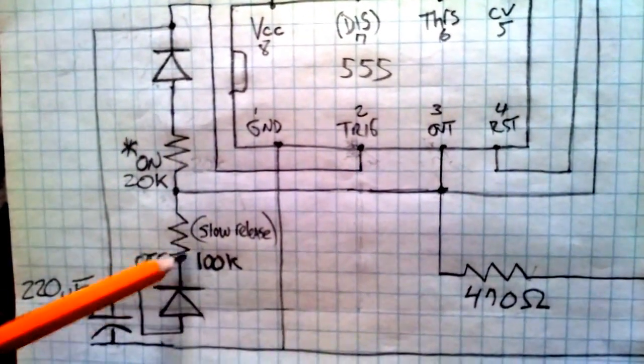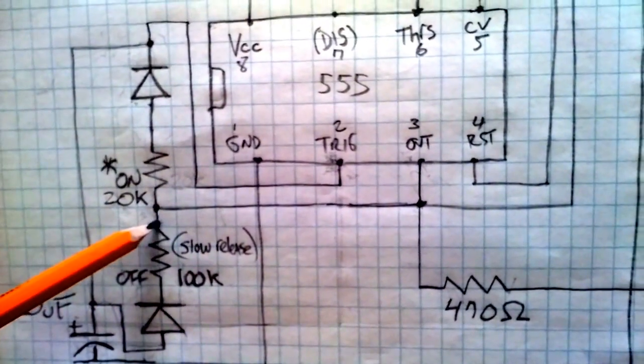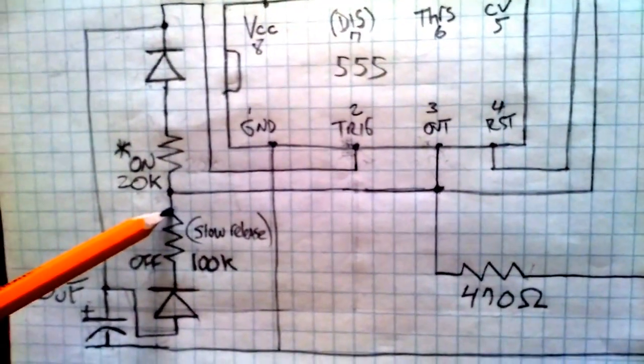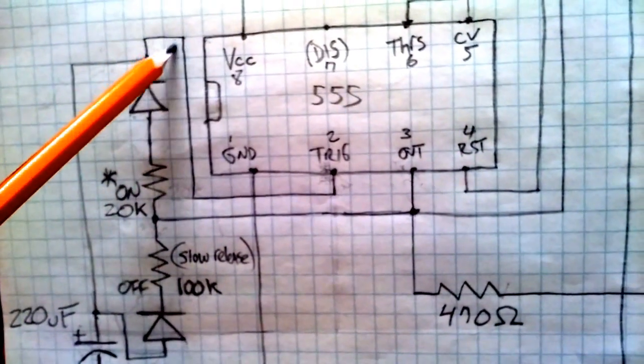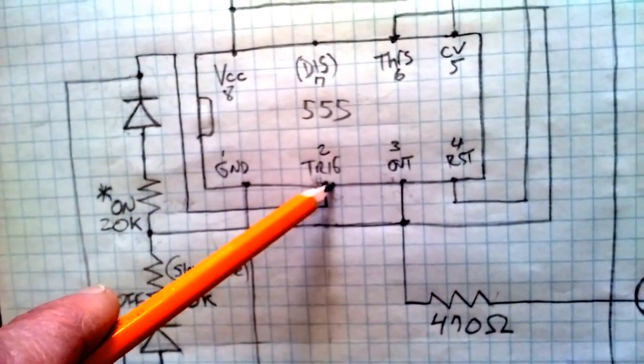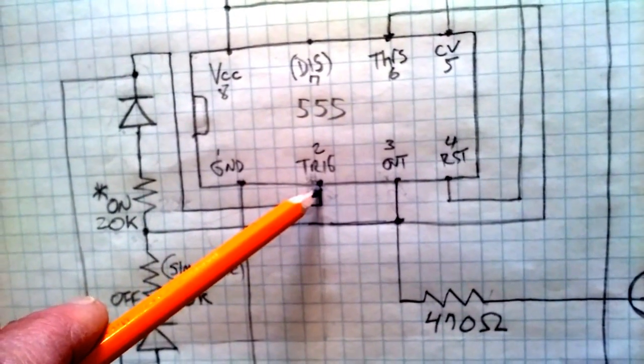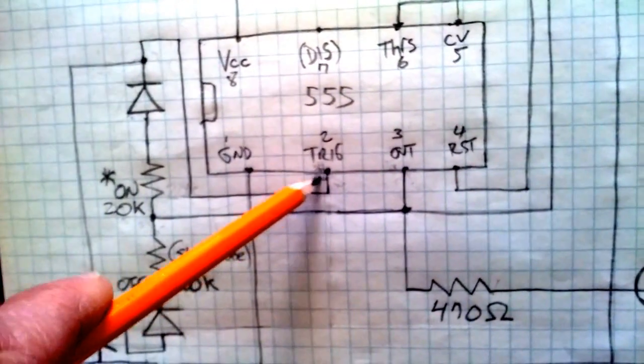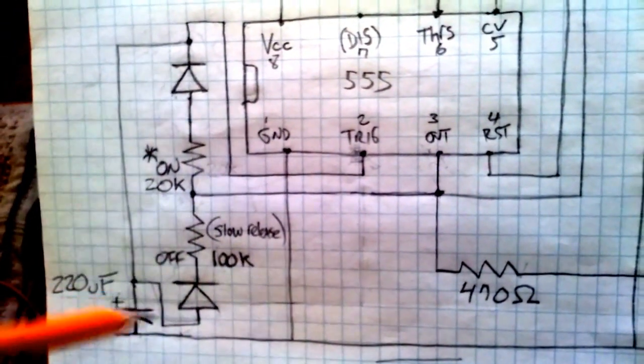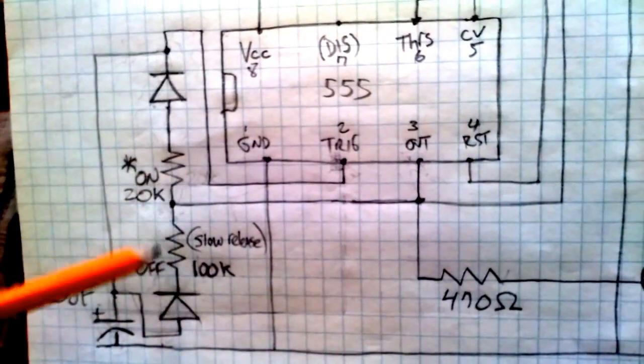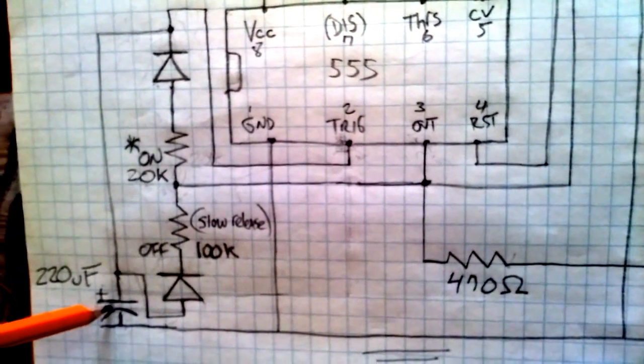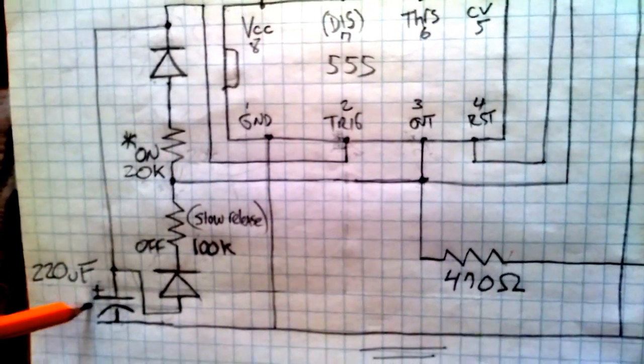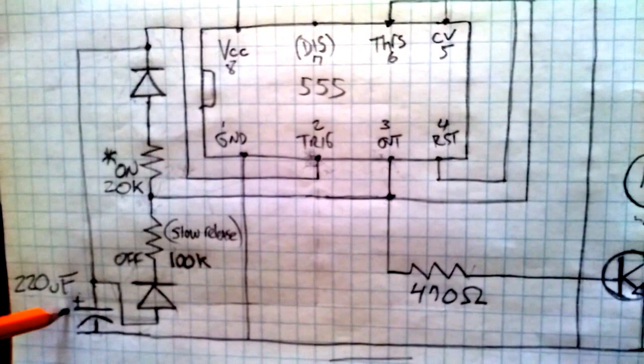is going to be released through this connection here into trigger pin 2. So that's what's going on here with the resistors and the 220 microfarad. You can experiment with values here—it's just giving me the kind of time that I want. Let's move on to the output pin 3.